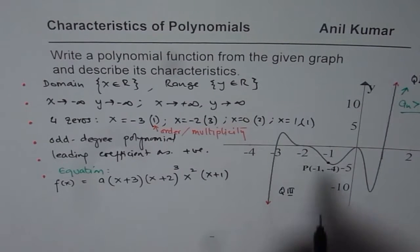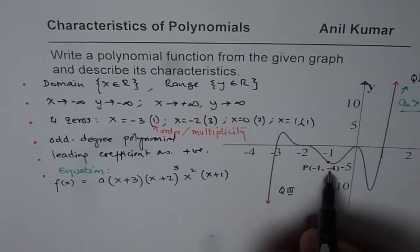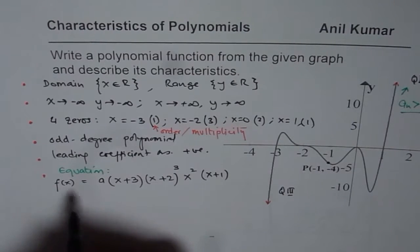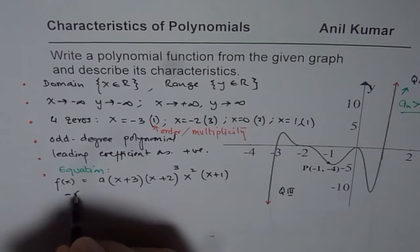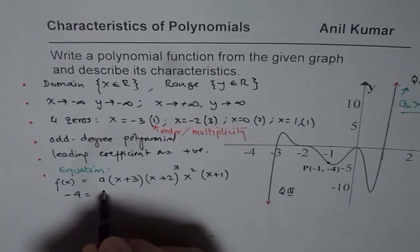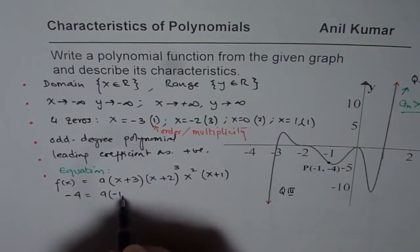To find the value of a, we can utilize the given point p. At minus 1, it is minus 4. So, f of x is equals to minus 4 when x is minus 1. So, let me replace x with minus 1.